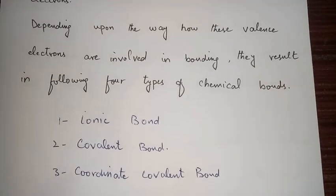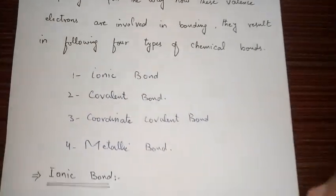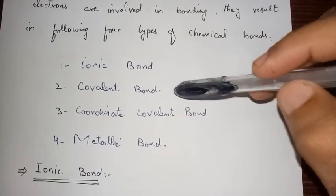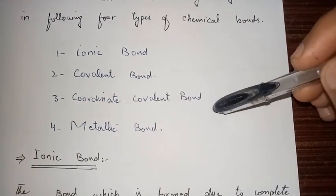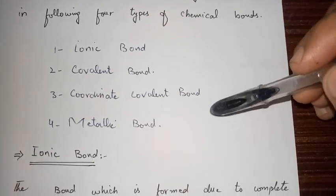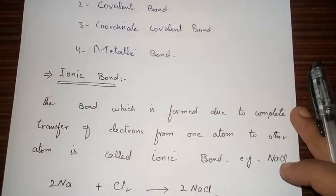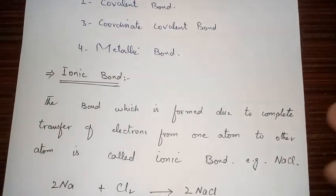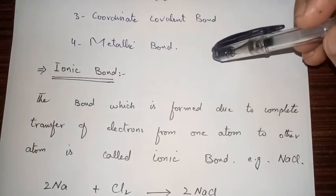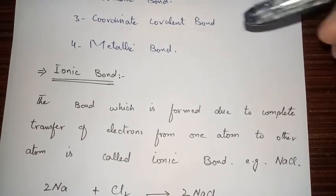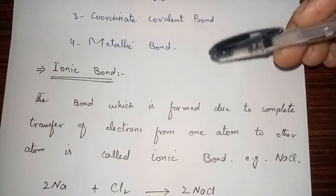Depending upon the way how these valence electrons are involved in bonding, they result in the following four types of chemical bonds: the first is the ionic bond, the second is the covalent bond, the third is the coordinate covalent bond, and the fourth is the metallic bond. We will discuss ionic bonds in detail first, and then covalent, coordinate, and metallic bonds in the next lectures.